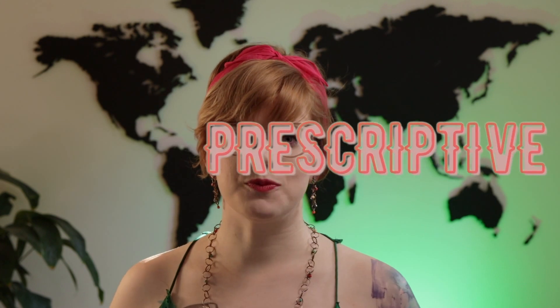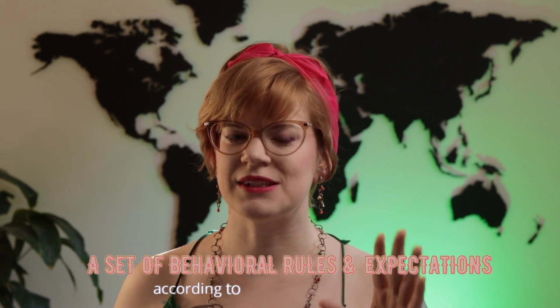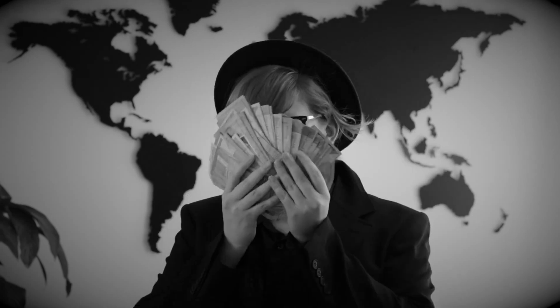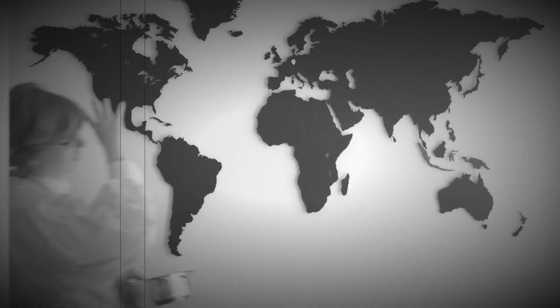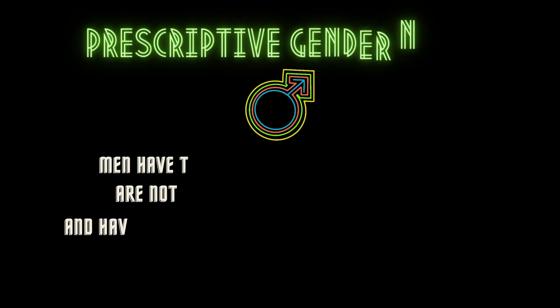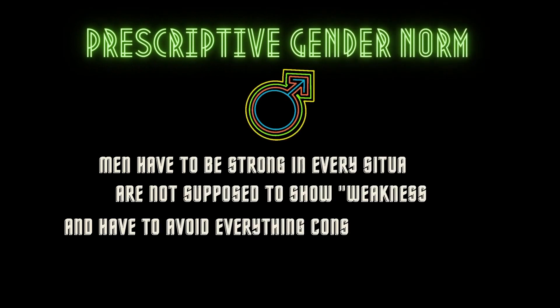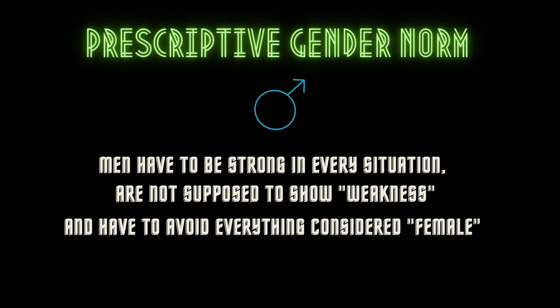Gender can also be prescriptive, which means what kind of sex-specific behavior they should show. In a country with a mainly binary gender order, descriptive attributions can look like this: men are sexually active, strong, the breadwinner, and protector of the family. Women are emotional, sexually passive, and caring for family and relationships.